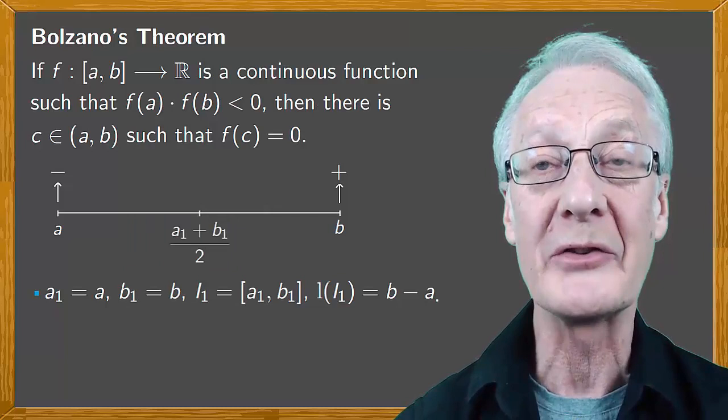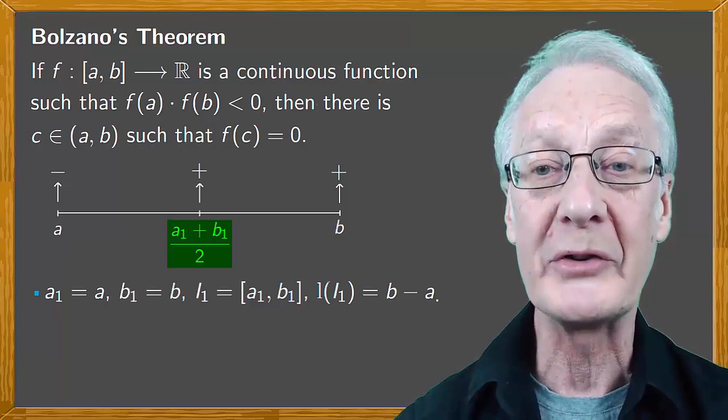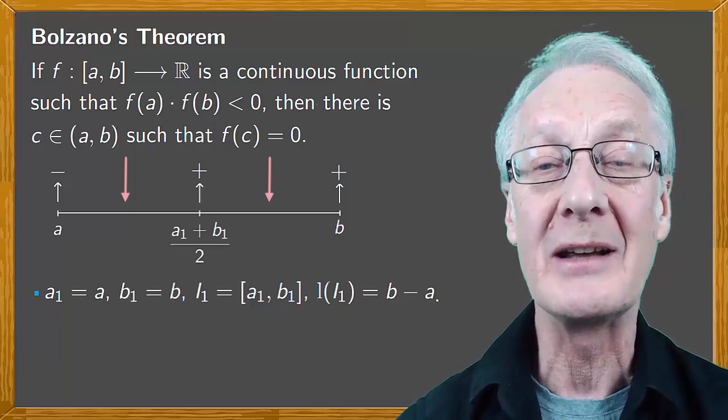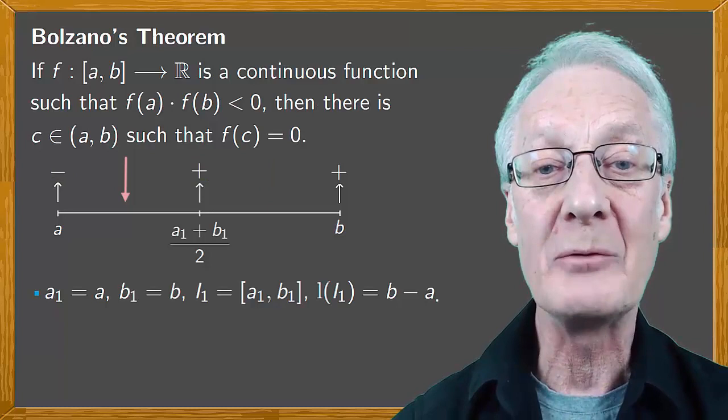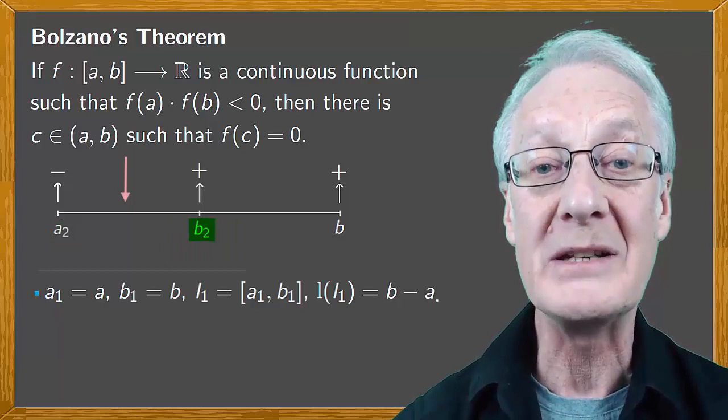If it's positive, in which of the two intervals does the image change sign at the ends? Well it has to be the one on the left side. Then we'll call the end point on the left a₂ and the midpoint b₂, giving us a new interval I₂ = [a₂, b₂].